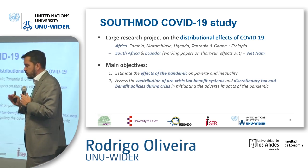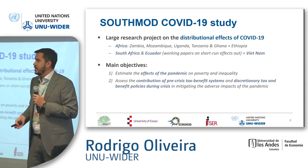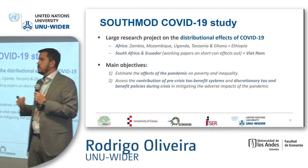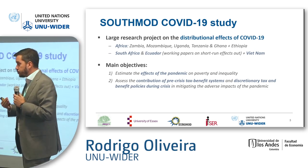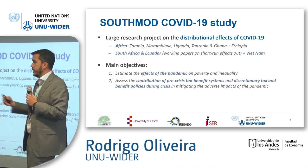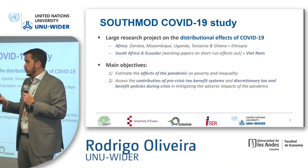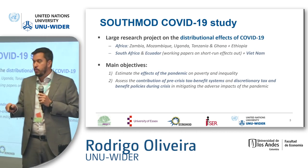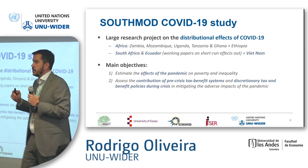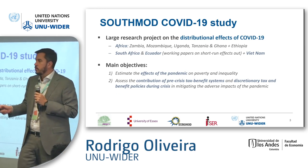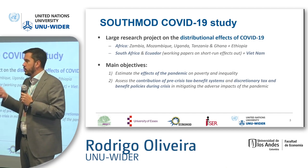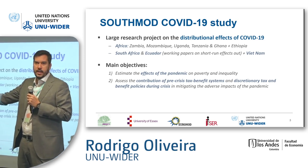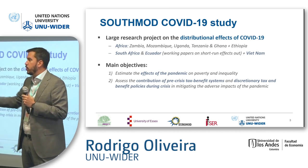This was a very joint effort with national teams because information about policies created in African countries was not easy to access. In Mozambique specifically, they had an expansion of the cash transfer announced around June–July 2020. But if we had simulated this policy based on that document, we would have done something completely wrong, because the national team informed us that the policy had implementation problems — it only started in 2021 due to bureaucratic delays in transferring international organization money.